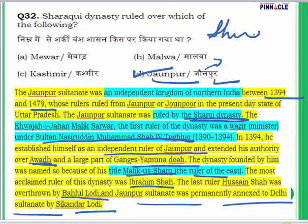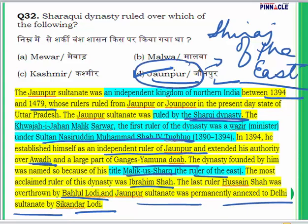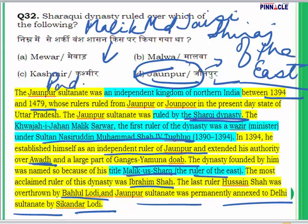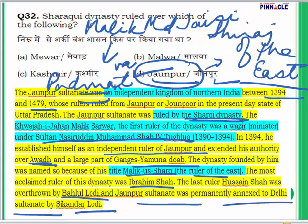Jaunpur is known as the 'Shiraz of the East' because of the educated and intellectual men of this place. Malik Muhammad Jaisi, the very famous writer who wrote Padmavat, belonged to Jaunpur. Padmavat is the story of Queen Padmini, who performed jauhar. Key points to remember: Jaunpur is called the Shiraz of the East, it was ruled by the Sharqi dynasty, Malik Muhammad Jaisi wrote Padmavat about Queen Padmini, and the story relates to Alauddin Khilji's desire to marry her, around the year 1301.